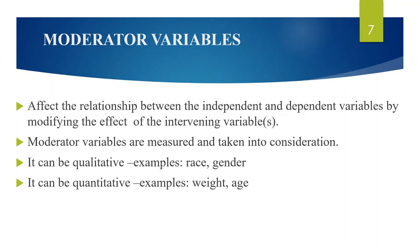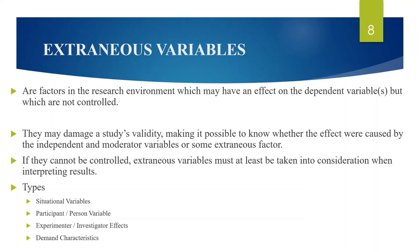Moderating variables: a moderating variable, also called a moderator variable, changes the strength or direction of an effect between the independent and dependent variables by modifying the effect of the intervening variables. Moderator variables are measured and taken into consideration in research studies. Moderating variables can be qualitative — non-numerical values like race, socioeconomic class, or gender — or they can be quantitative — numerical values like weight, reward level, or age.